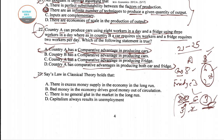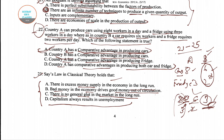For question number 23: Say's Law in classical theory holds that — four options are given: there is excess money supply in the economy; bad money drives good money out of circulation; there is no general glut in the market in the long run; capitalism always results in unemployment. Option C is the right answer — there is no general glut in the market in the long run, meaning the economy will achieve full employment level.